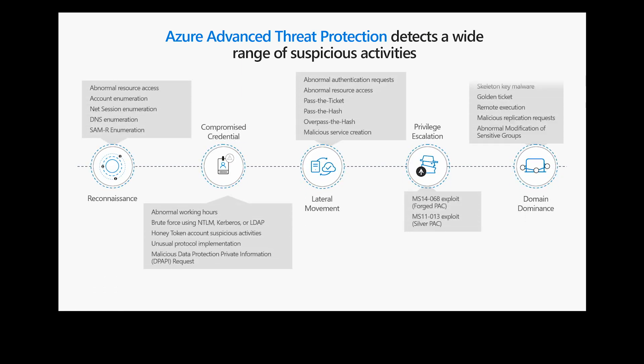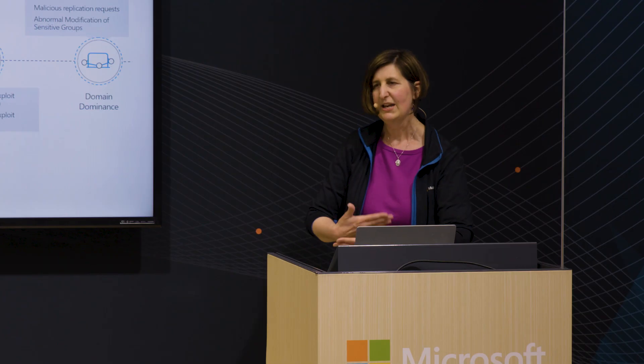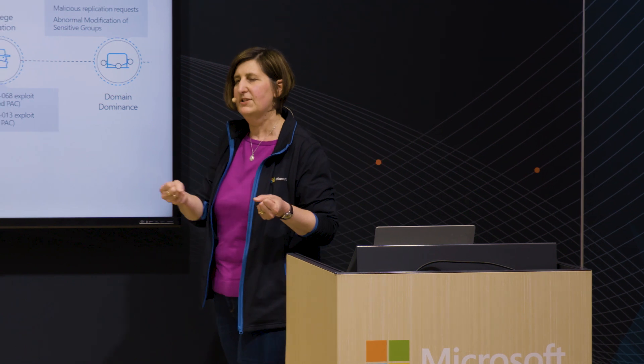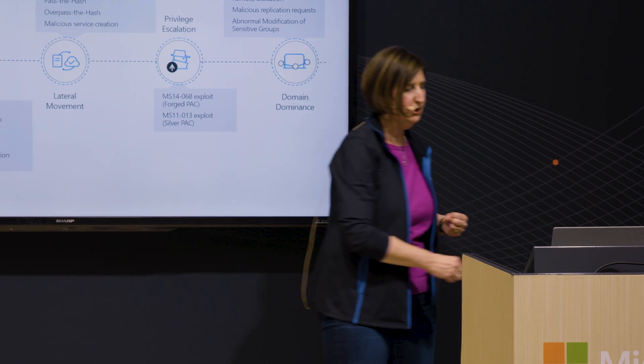Azure ATP has a large number of detections across the different components of the kill chain. We're looking for reconnaissance, compromised credentials, lateral movement like pass the hash and pass the ticket, privilege escalation, and domain dominance techniques like golden tickets and silver tickets. You combine that knowledge of attacker techniques with machine learning, and we have a good set of detections that help you really understand what's happening in your environment without having to parse through thousands of alerts.